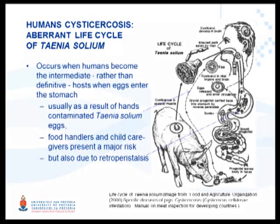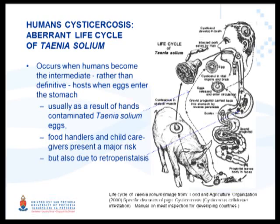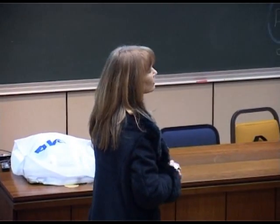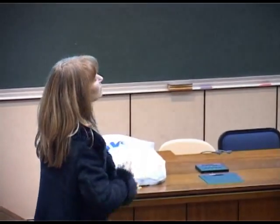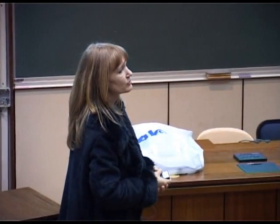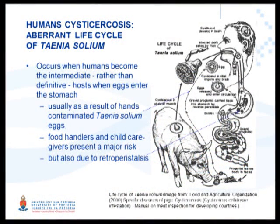The aberrant life cycle of Taenia solium: normally the human should only get the adult tapeworm in their intestines. But sometimes by accident, human beings consume the eggs. That usually happens with improper hygiene, not washing hands often enough. Self-contamination is of great concern - child caregivers, grandparents, those who stay at home don't wash their hands often enough, and children accidentally ingest these eggs. Food handlers can also spread this to the rest of the household. This mode of transmission usually leads to neurocysticercosis.